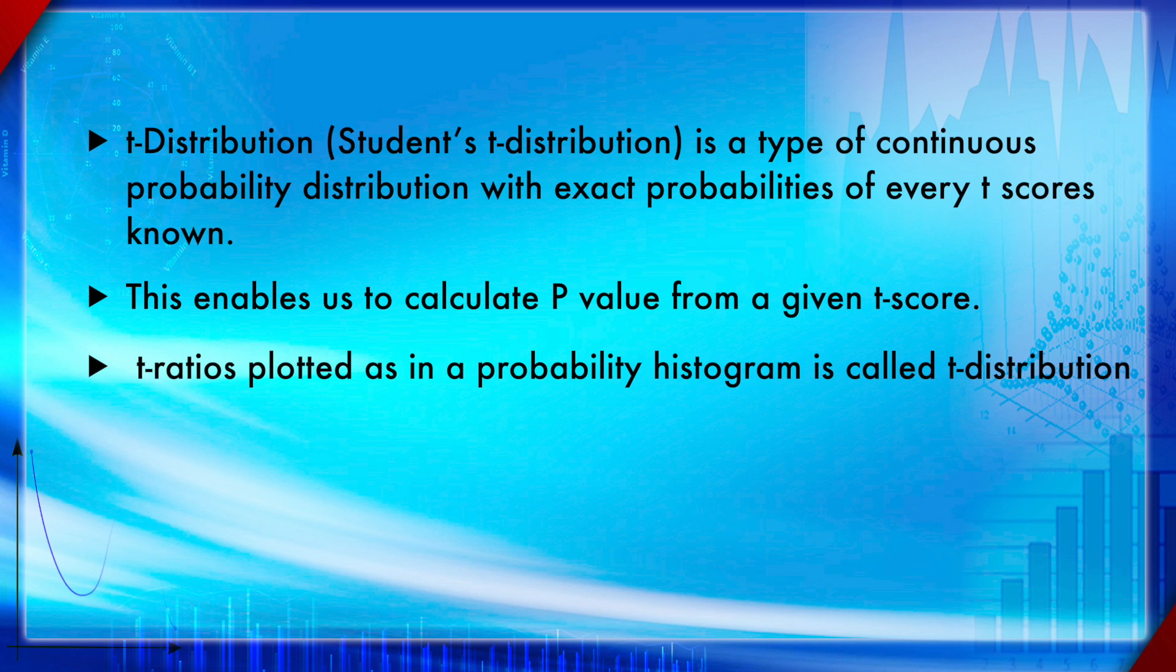The t-ratio is plotted in a probability histogram known as t-distribution histogram, which is identical to the Gaussian histogram, which we are going to explain in a later module. It's a characteristically bell-shaped histogram.